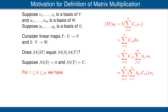Now let's fix K between 1 and P, and look at what ST does to the basis vector U sub K. We have ST of U sub K is S applied to T of U sub K. T of U sub K is an element of the vector space V, so it's some linear combination of the basis vectors V1 up to VN, and the specific linear combination is given by the entries of the matrix C. Thus T of U sub K is the vector shown in parentheses on the first line. To get from the first line to the second line, we simply use the linearity properties of S. The vector S of V sub R is an element of the vector space W, thus it is a linear combination of the basis vectors W1 up to WM. The specific coefficients are given by the matrix A, the matrix of the linear map S, getting us from the second line to the third line.